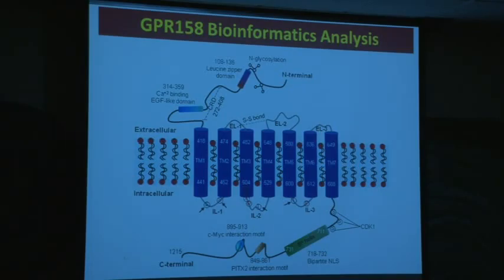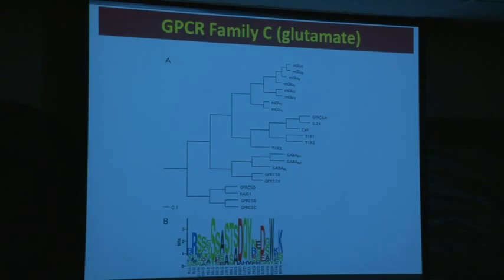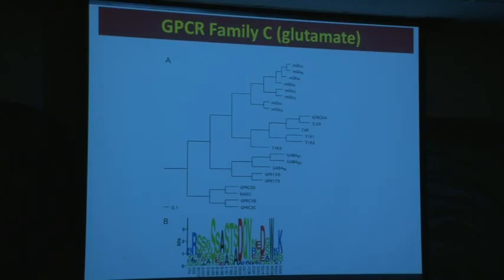It is a member of the family C glutamate family by its homology with the seven transmembrane domain. This is a very small family. Family A, which is where rhodopsin belongs, is quite large, with several hundred members. But this is a very small family. It includes the glutamate receptors, taste receptors, and the GABA receptors — a lot of very important receptors found in the brain and the retina.